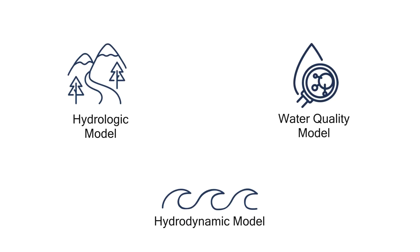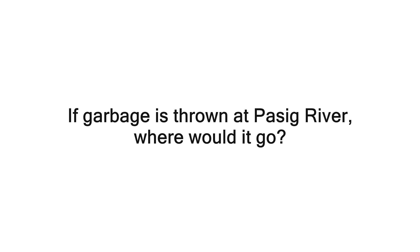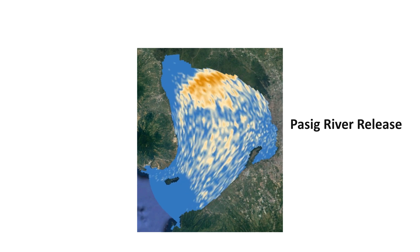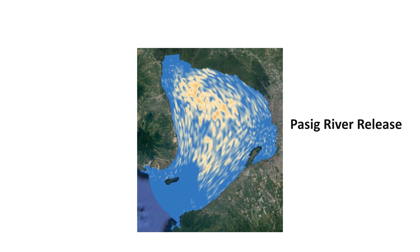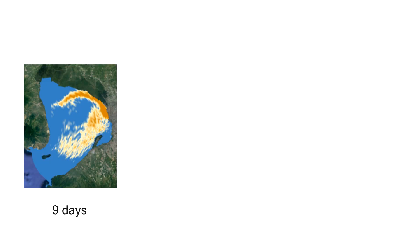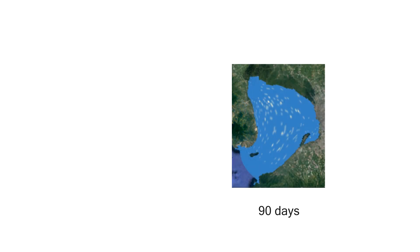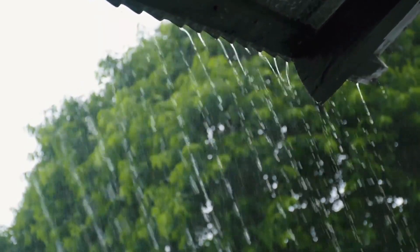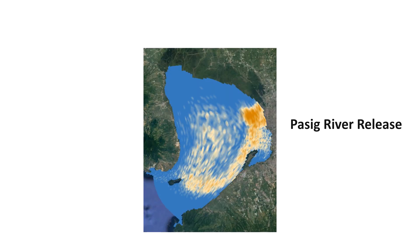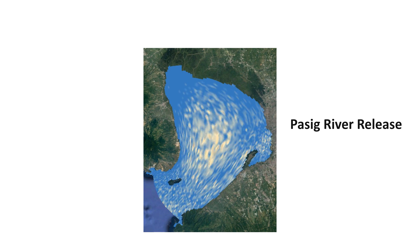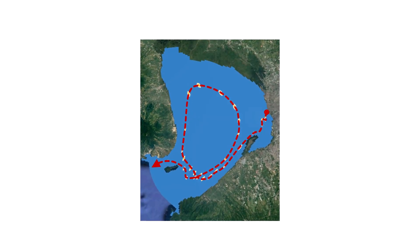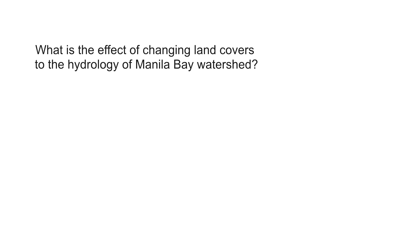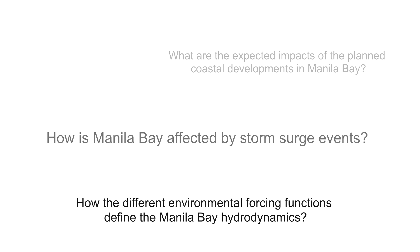With these powerful tools, we can now have insights on environmental scenarios. Say someone throws garbage in this location during the dry season — this is where those pollutants go after nine days, twelve days, a month, three months, half a year. However, during the wet season, it takes a different path. Let's focus on one particle: this one traverses in a clockwise circular path before it finds its way out of the bay. Those are only some of the many questions we could answer through numerical modeling.